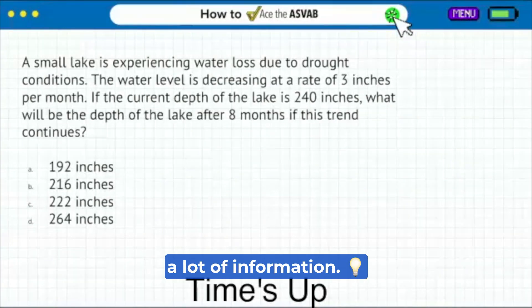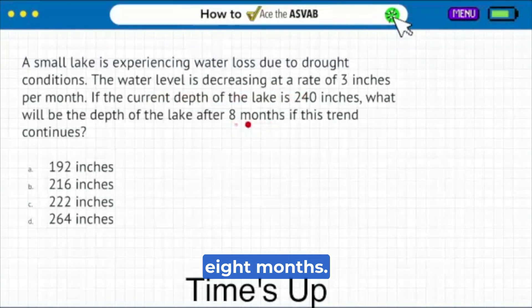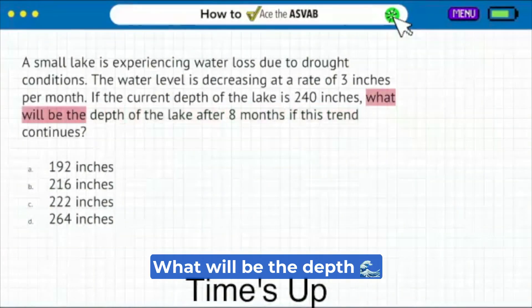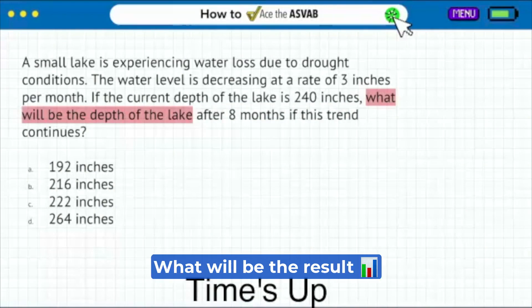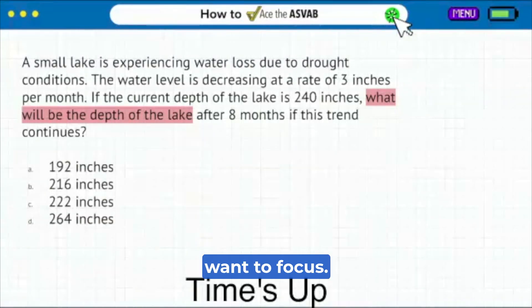So my party people, you see how you're given a lot of information. You're given the current depth, you're given a time period of eight months, but you have to ultimately understand that what you're looking for is the y, what will be the depth of the lake, what will be the result after eight months.